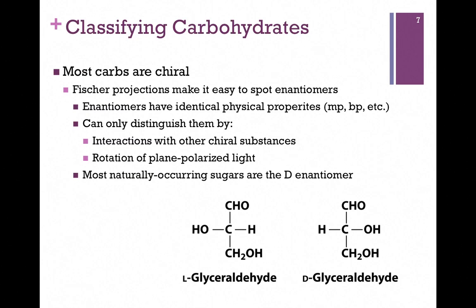Fischer projections make it easy to spot enantiomers. These enantiomers have identical physical properties — same melting point, boiling point, and so forth. The only way to distinguish them is by how they rotate polarized light or how they interact with other substances. Even though they have identical physical properties, they are biologically distinct: there may be an enzyme that binds the D sugar but not the L sugar, so nature can be very specific. Most naturally occurring sugars are the D enantiomer — recall that with amino acids, they were usually the L form, but in carbohydrates it's the D enantiomer.